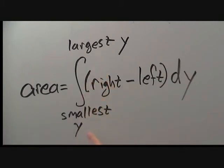These will be the smallest y value we encounter and the largest y value we encounter in the region in question. We also need the left and right bounds on the region, so we'll integrate the right function minus the left function. And this will all be integrated using dy. That's because we chose horizontal strips.